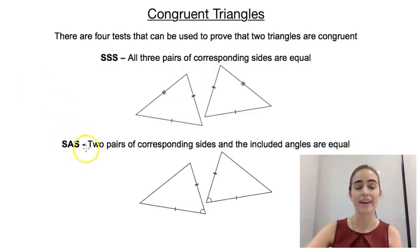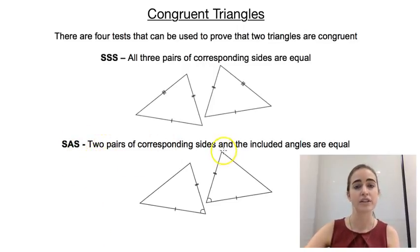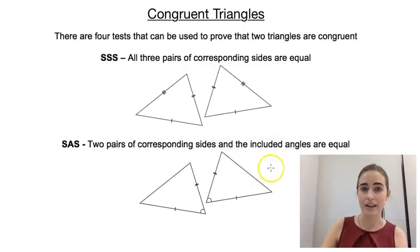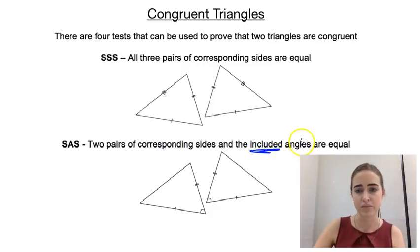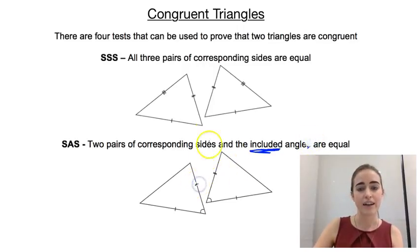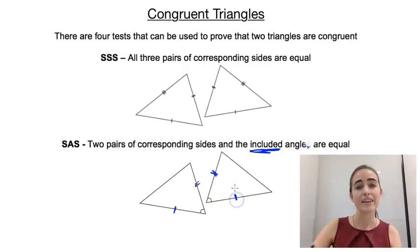Our second test is called the SAS test, which stands for side, angle, side. In that test we need two pairs of corresponding sides equal, and we need the included angle equal as well. The included angle is the angle that's between those two sides. So here we've got this side and this side equal, and the included angle is the angle between them.